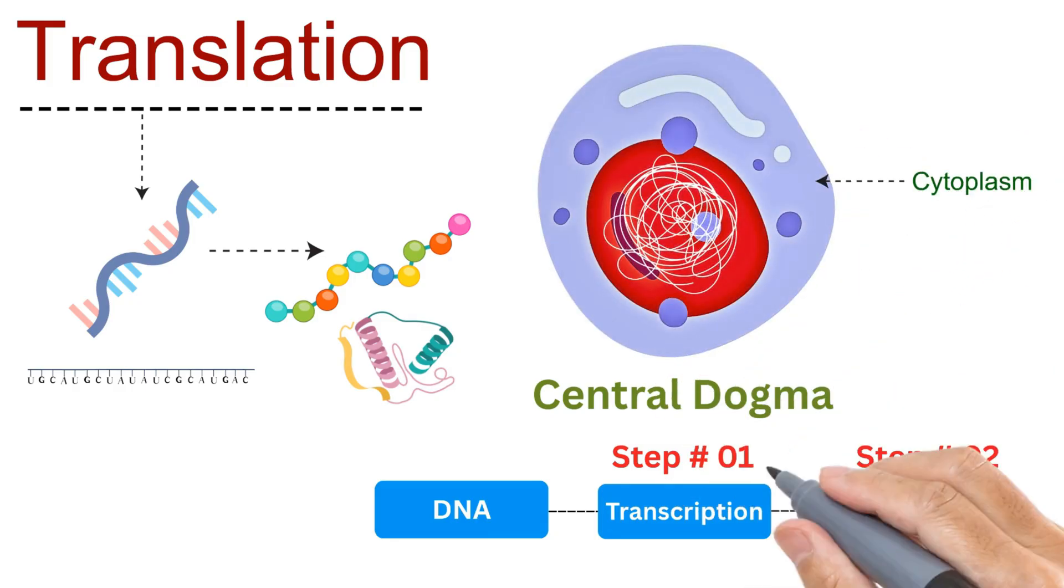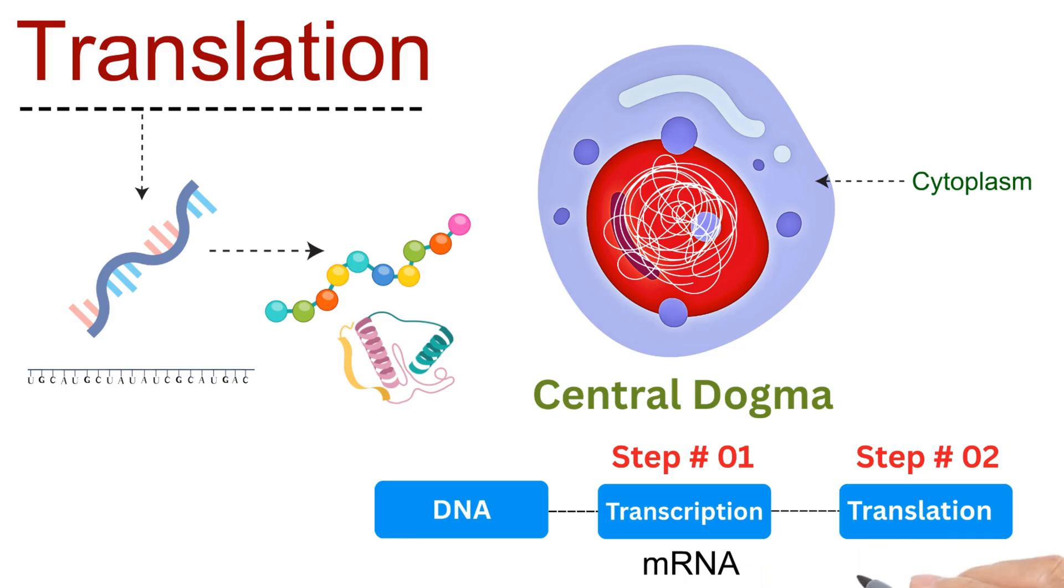Just to recap, the central dogma describes how genetic information flows. DNA is transcribed into mRNA, and that mRNA is then translated into protein.